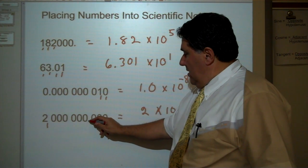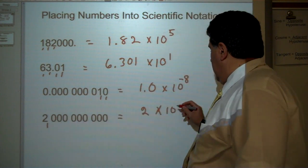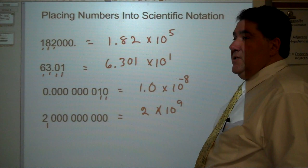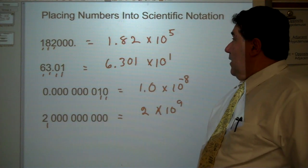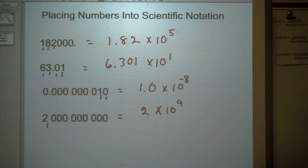2 times 10 to how many decimal places? 1, 2, 3, 4, 5, 6, 7, 8, 9. And since it's a large number greater than 1, it's 10 to the 9th. And that's how we place numbers into scientific notation. Thank you.